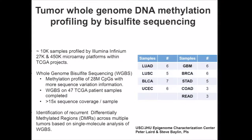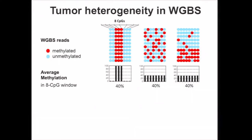Our group developed a method for identifying recurrent differentially methylated regions, which I will refer to as DMR from now on, across multiple tumors based on the single molecule approach for whole genome bisulfite sequencing. Whole genome bisulfite sequencing offers a great but also challenging opportunity to detect tumor heterogeneities reflected in the bisulfite-converted sequencing reads.